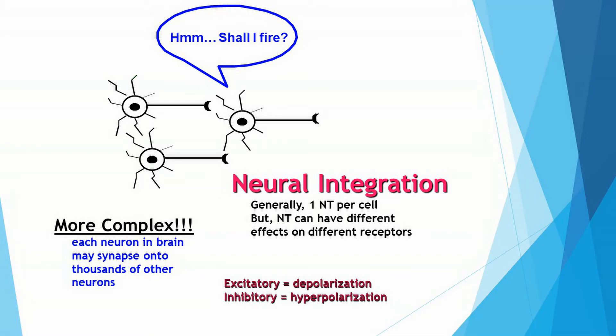Generally there's one type of neurotransmitter per cell, but each neurotransmitter can have a different effect on different receptors. If that effect is excitatory, then the result is depolarization, and if it's inhibitory, then the result is hyperpolarization.